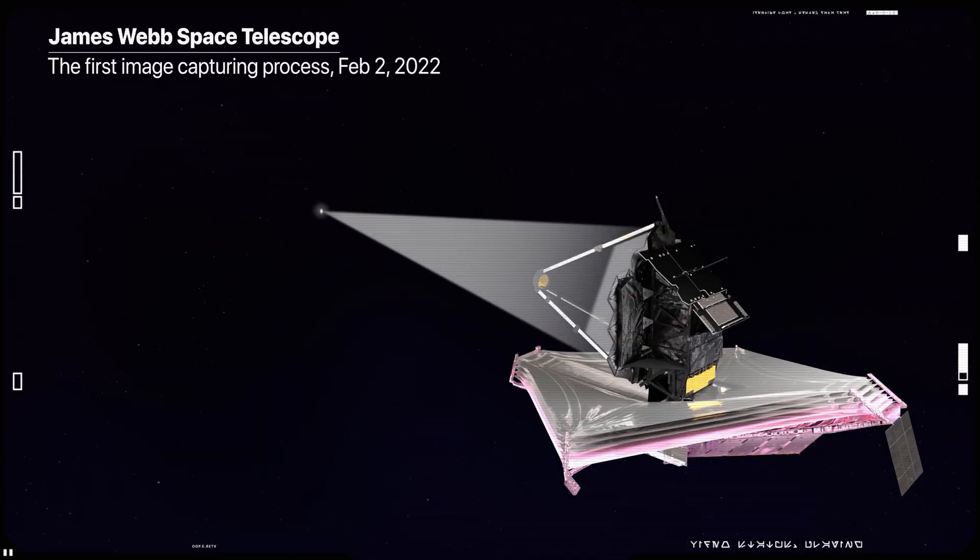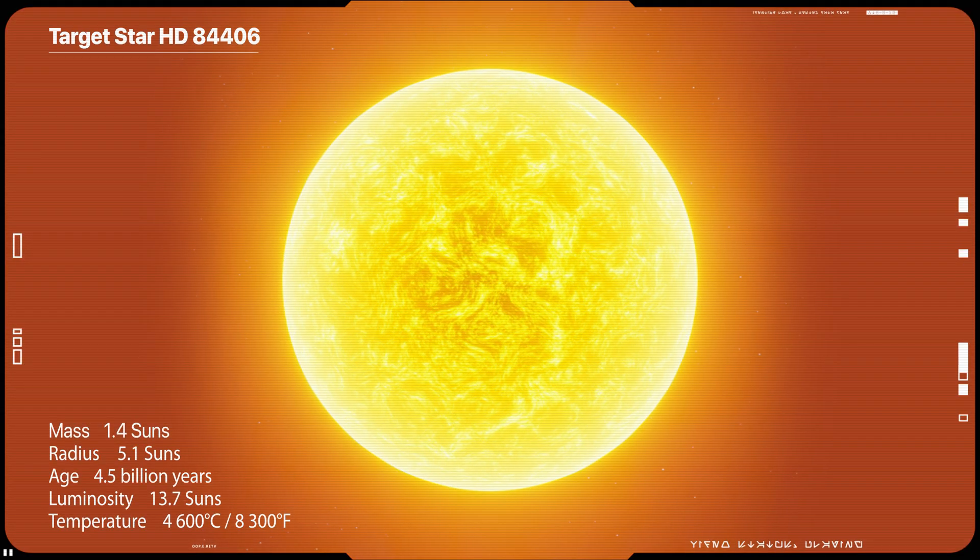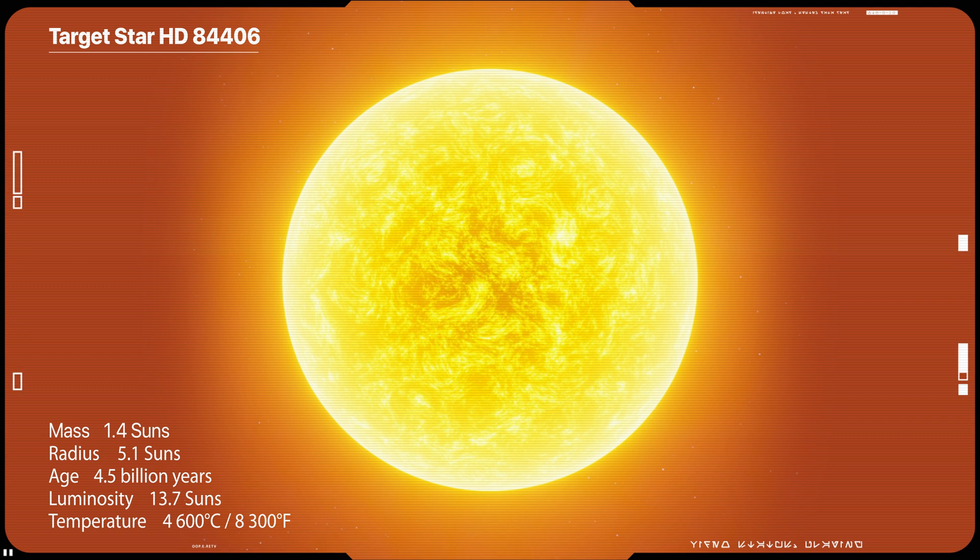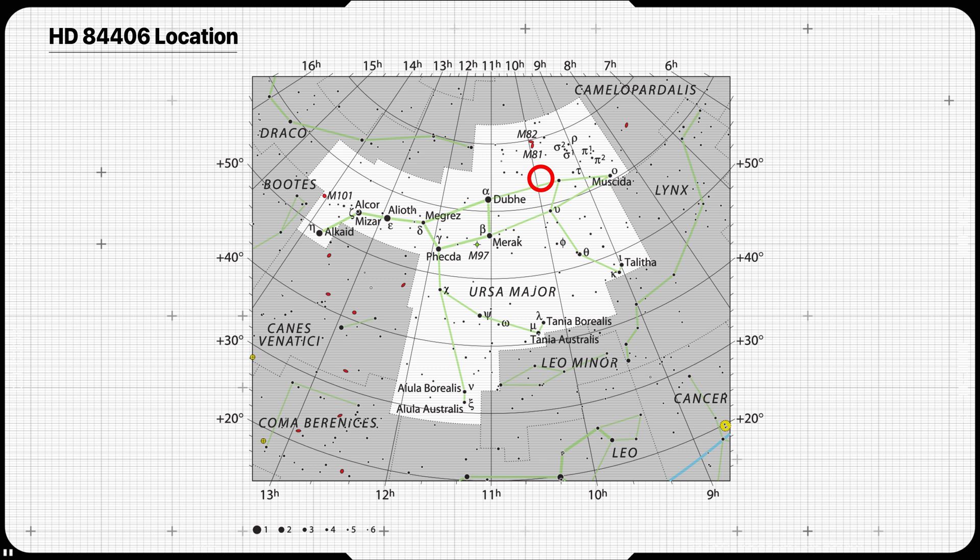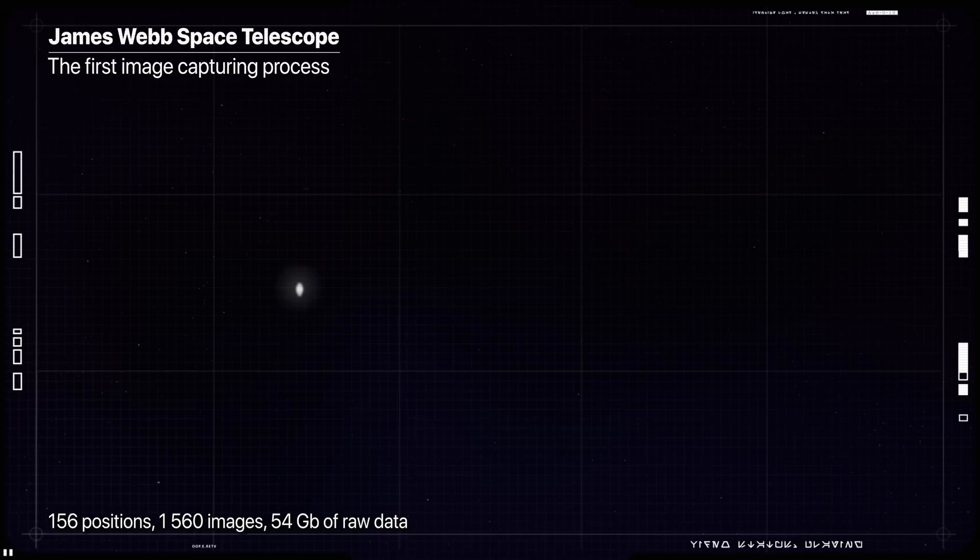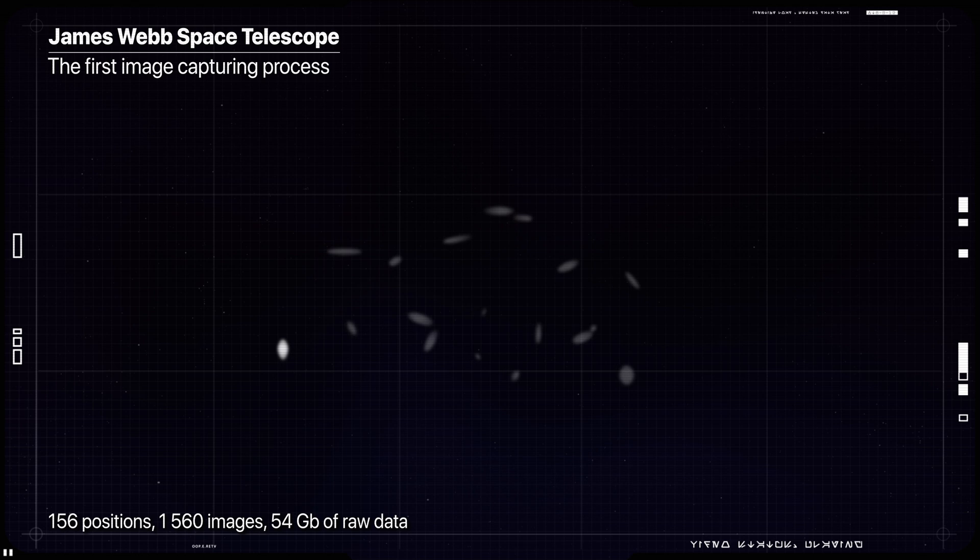The first image capturing process began on February 2, 2022. The telescope was pointed at a bright isolated star in the constellation Ursa Major, known as HD 84406. This star was chosen specifically because it's easily identifiable and not crowded by other stars of similar brightness, which helps to reduce background confusion.